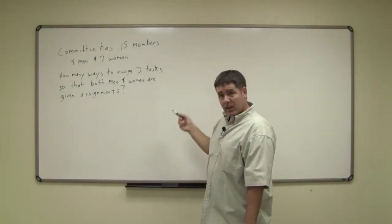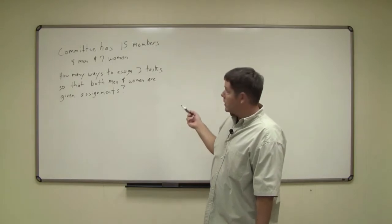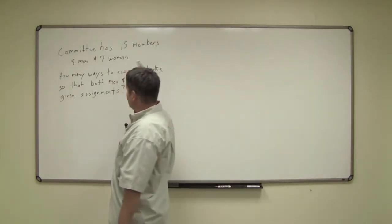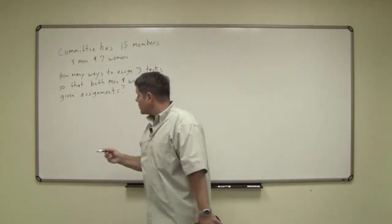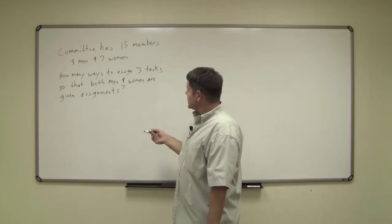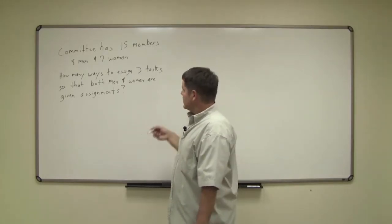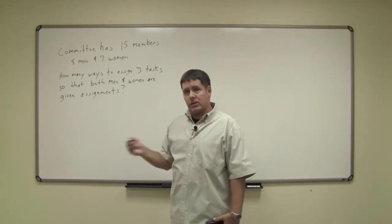In this problem we start by having a committee. The committee has eight men and seven women for a total of fifteen members. The question wants us to assign three tasks such that both men and women are given assignments.